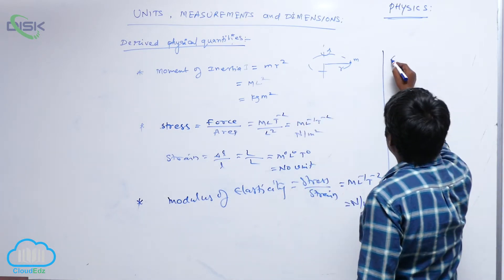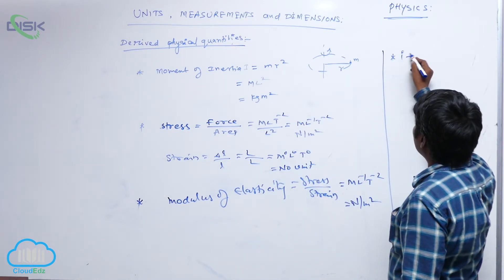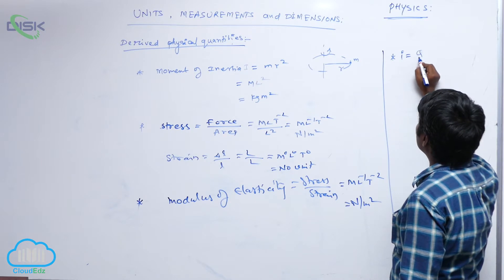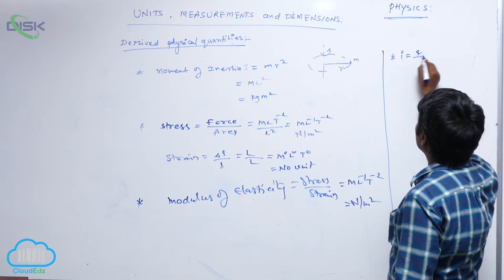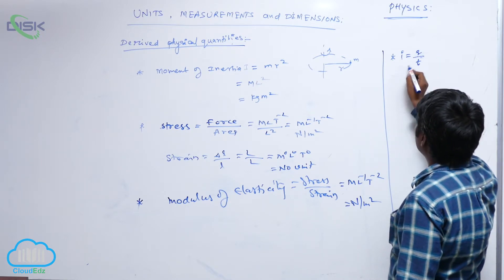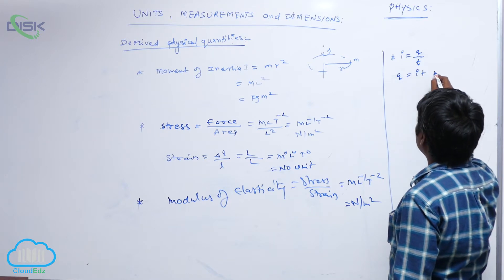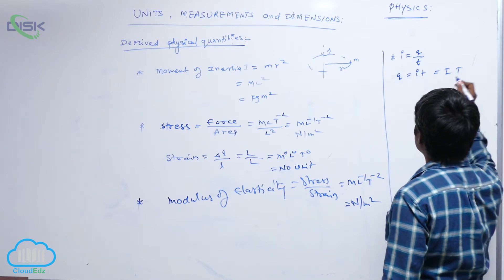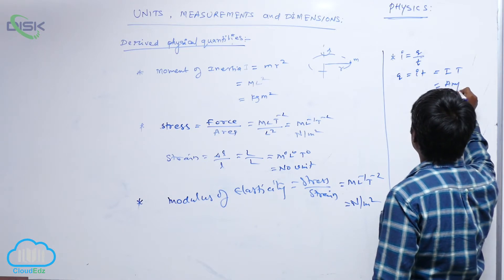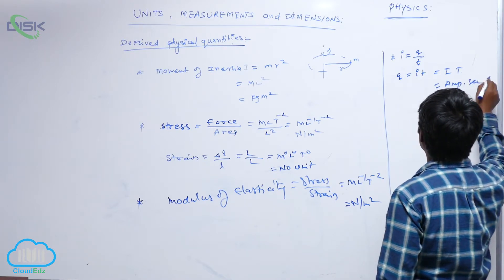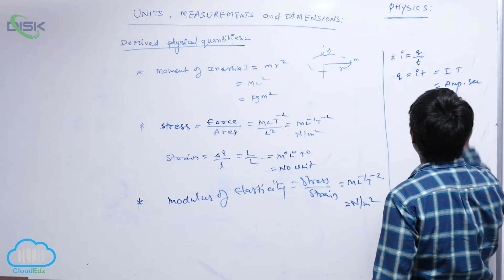And one more thing, current. Electric current is equal to charge by time, so q equal to i t, that is i t is the dimensional formula. So this is ampere, this is second, we call this as coulomb.